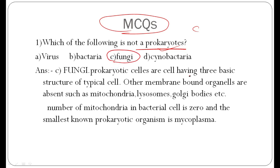I will talk about the details of prokaryote cells. A number of prokaryotes have three basic structures of a typical cell. Other membrane-bound organelles are absent, like mitochondria, lysosome, Golgi bodies, etc.